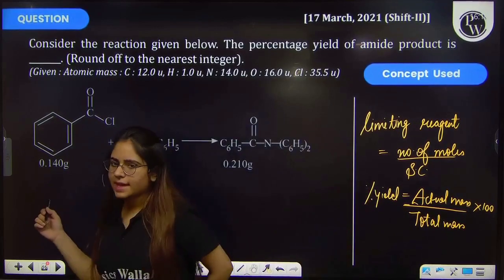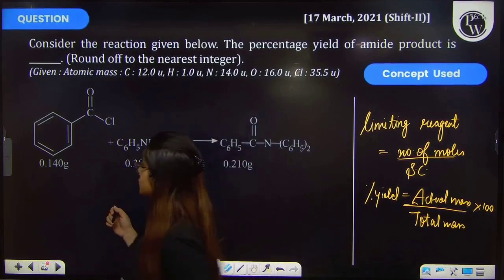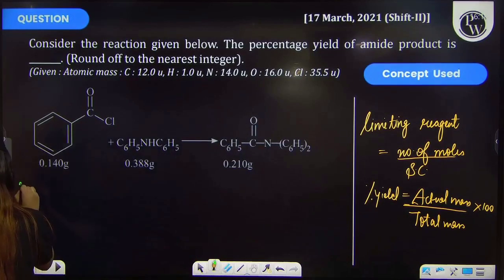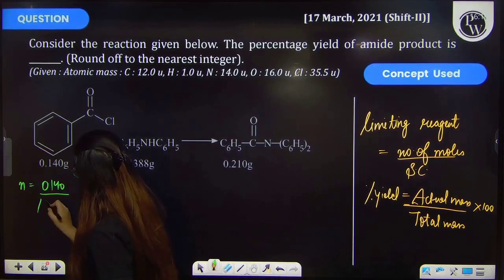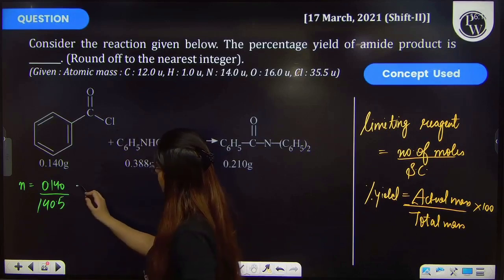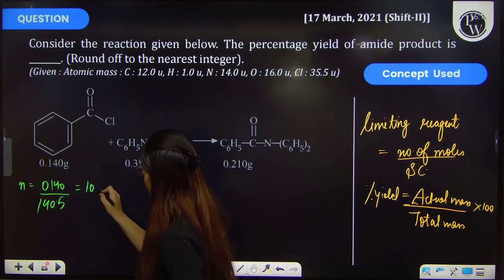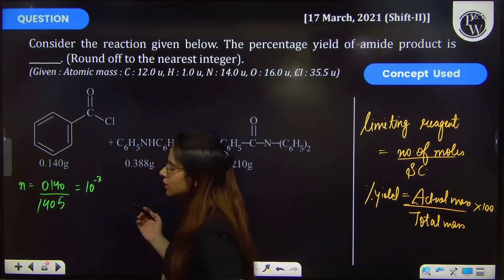So first of all, let's calculate the number of moles for these two reactants. Number of moles will be equal to given weight upon molecular weight. Molecular weight for this is 140.5. That will almost be equal to 10 × 10^-3 number of moles.